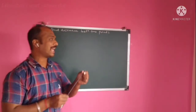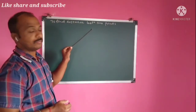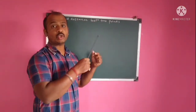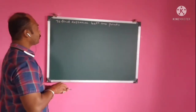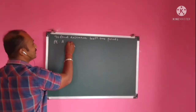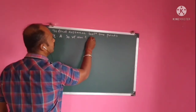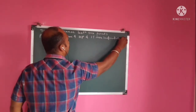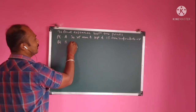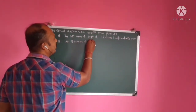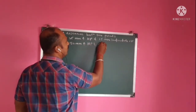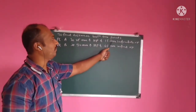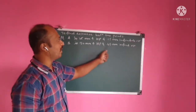We are going to see problems where the points are not at the same distance from HP or VP — that is, the distances are different. For example, Point A is 25 mm above HP and 15 mm in front of VP, and Point B is 50 mm above HP and 45 mm in front of VP.